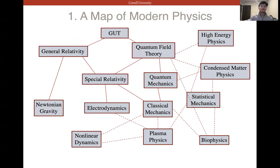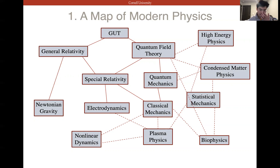So here I have a map of modern physics. We have classical mechanics — Newtonian mechanics, and perhaps Lagrangian or Hamiltonian mechanics, which are pretty much identical to Newtonian mechanics but based on different assumptions. We also have electrodynamics. At some point in history, people wanted to unify electrodynamics and classical mechanics, so they developed something called special relativity. Einstein also wanted to merge Newtonian gravity with special relativity, proposing that spacetime is curved — giving us general relativity.